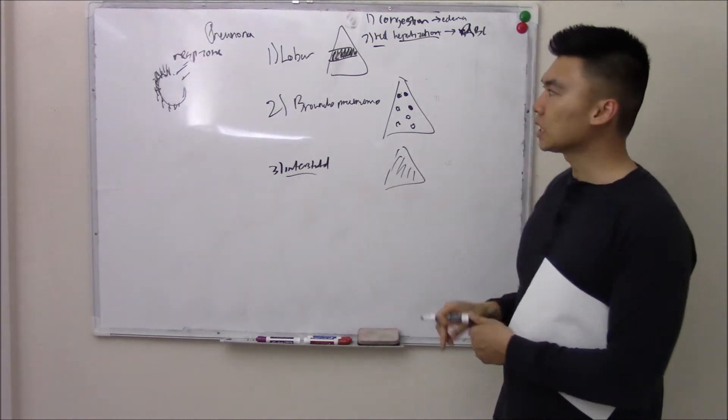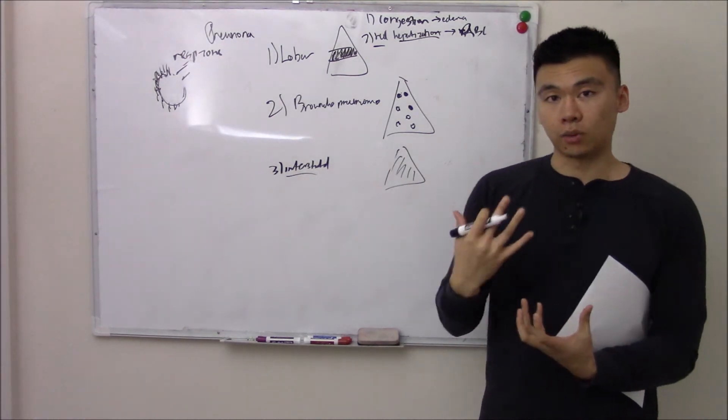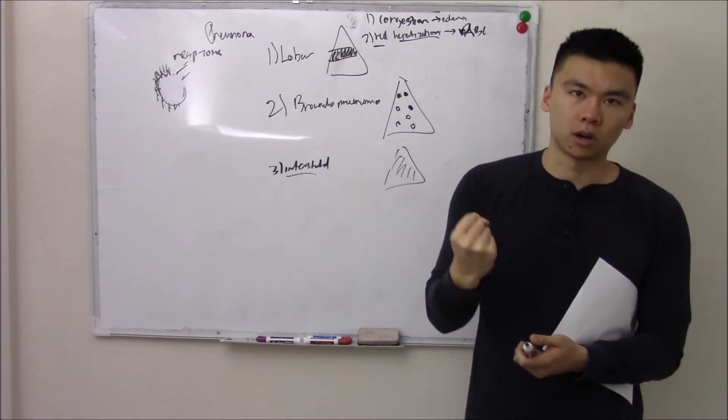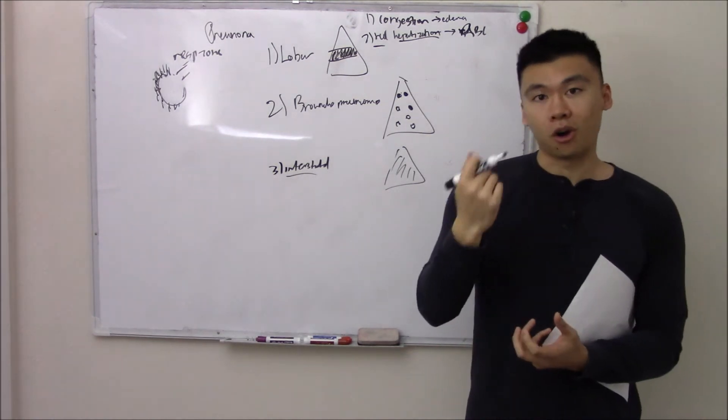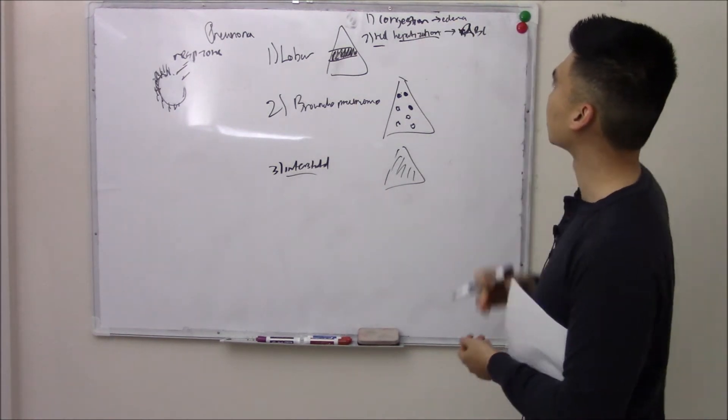Red blood cells. That's the red part. What is the hepatization part? Hepatization means like your liver. Instead of the nice spongy tissue that we associate with our lungs, now it's becoming firm from all the edema, firm from all the exudate and it's becoming hard like your liver. That's the hepatization part.